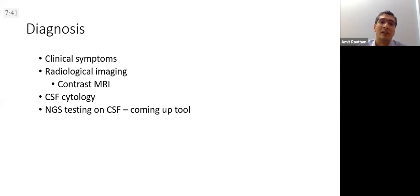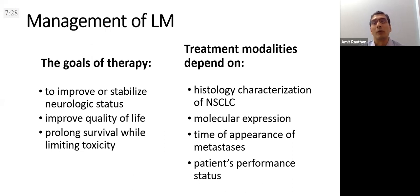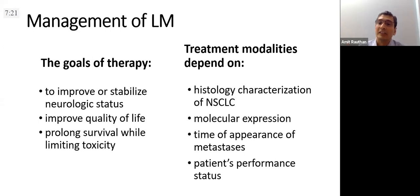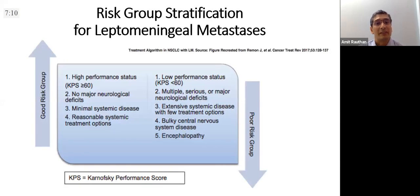The goals of therapy are to improve and stabilize neurological status, improve quality of life, and prolong survival with limited toxicity. These goals and the modalities used depend on histology, molecular profile, time of appearance of metastasis, and patient performance status.